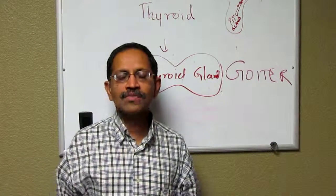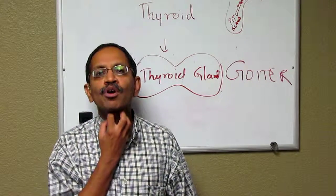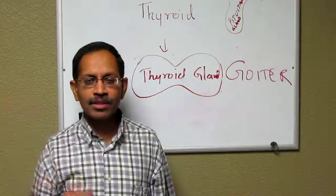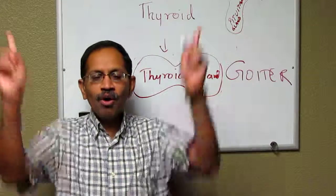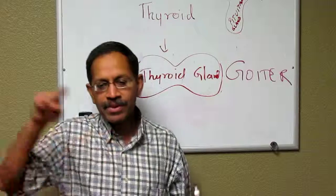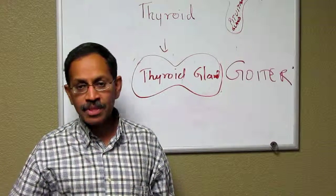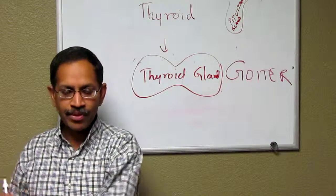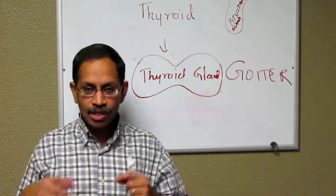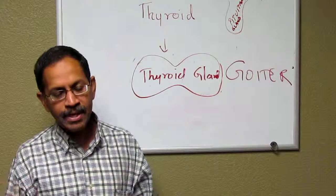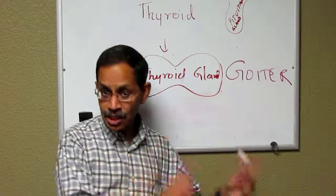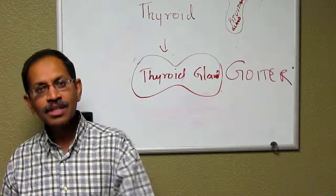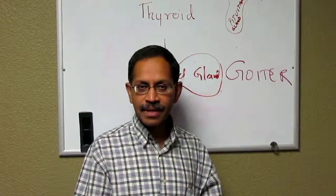The commonest cause of goiter can be because of low-acting thyroid — hypothyroidism — or over-acting thyroid — hyperthyroidism. These can go by their names: Graves' disease for hyperthyroidism, named after Dr. Graves who described it, and Hashimoto's thyroiditis for hypothyroidism, named after Dr. Hashimoto who described it.